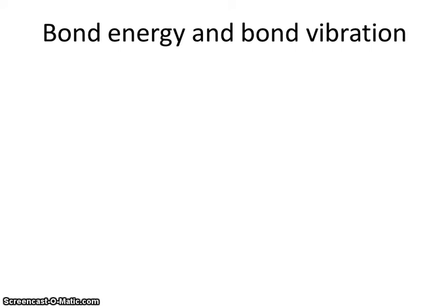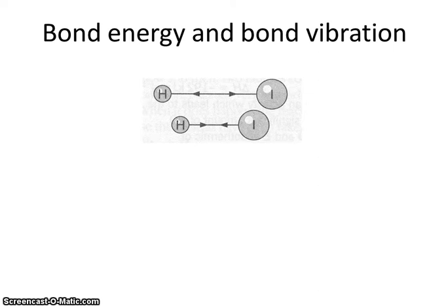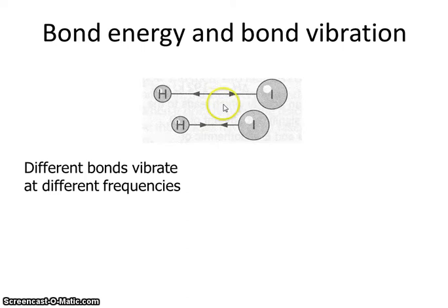Let's think about what we mean when we talk about the vibration of bonds. Here's a very simple molecule, hydrogen iodide. We can think of it as two atoms connected by a single covalent bond, and that single covalent bond acts a little bit like a spring. So you can imagine the spring lengthening and shortening, and we talk about that as being the vibration of the bond. That happens many millions of times a second, and that represents the frequency of the bond. The key thing to remember is that different bonds vibrate at different frequencies.